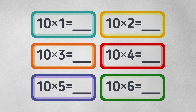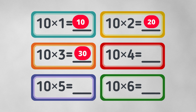10 times 1 equals 10. 10 times 2 equals 20. 10 times 3 equals 30. 10 times 4 equals 40. 10 times 5 equals 50. 10 times 6 equals 60.